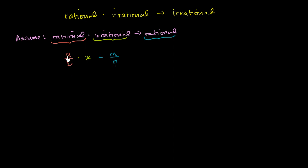So I'm assuming that a rational number, which can be expressed as a ratio of two integers, times an irrational number can get me another rational number. Let's see if we can set up some form of contradiction here. Let's solve for the irrational number.